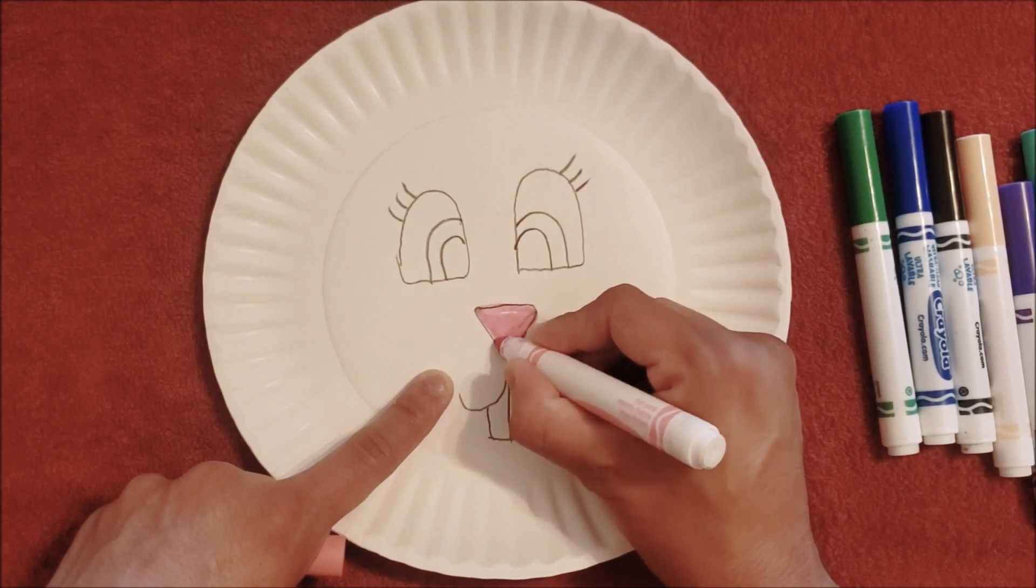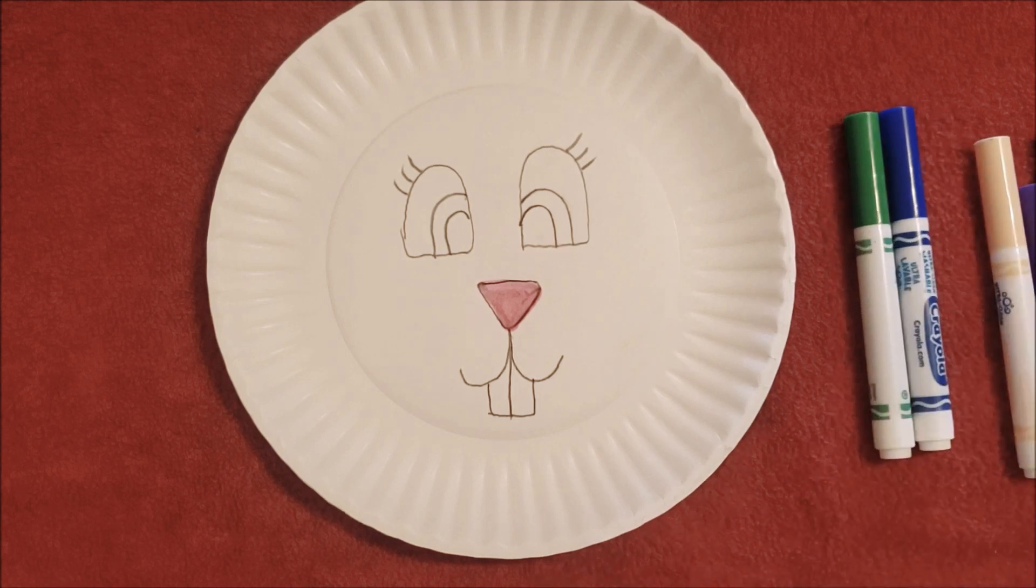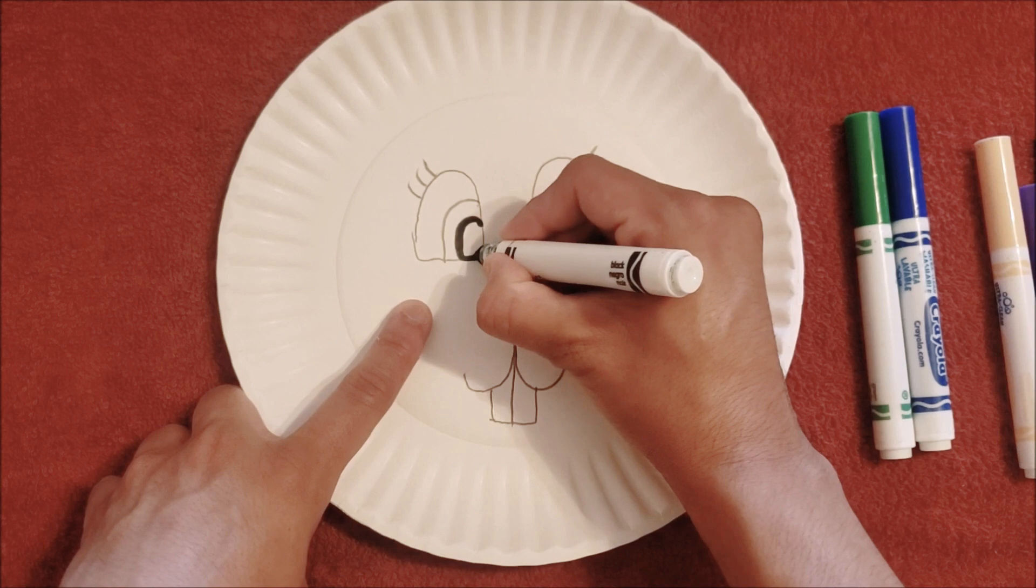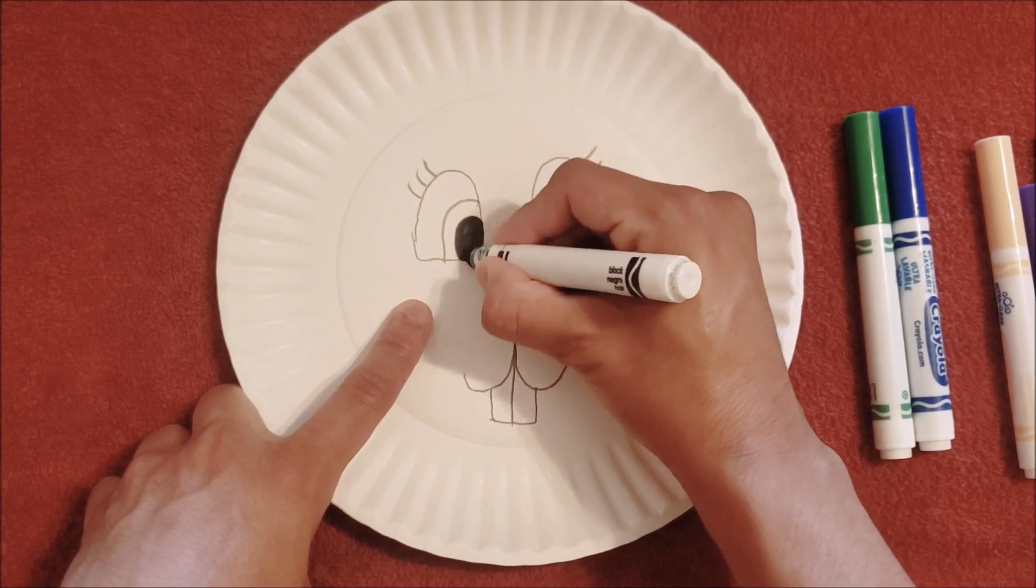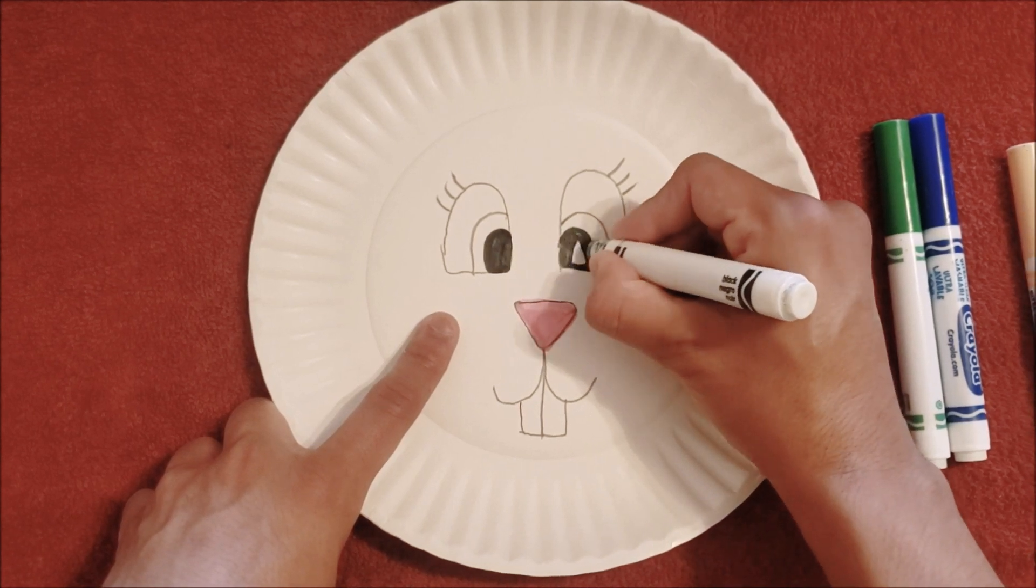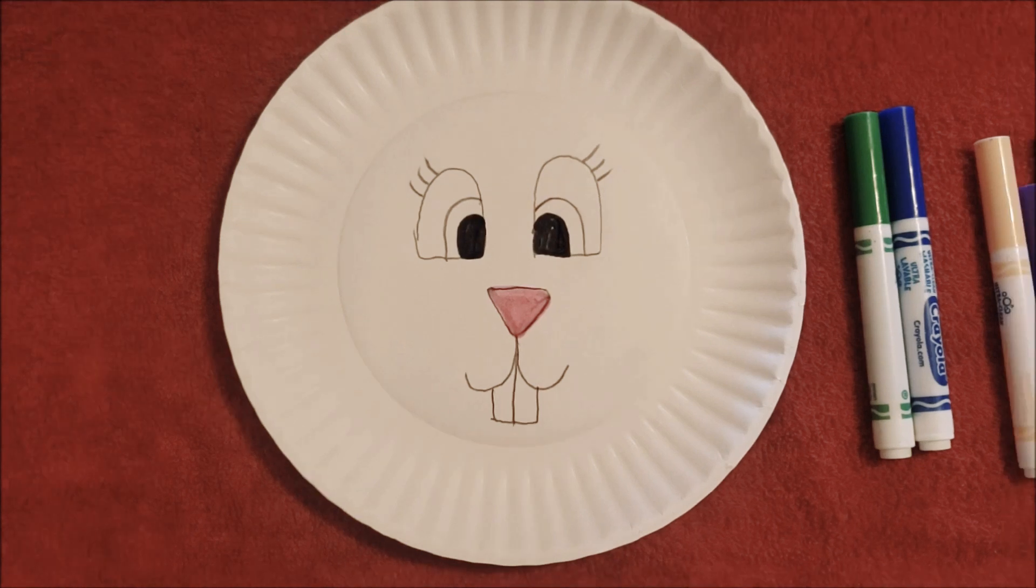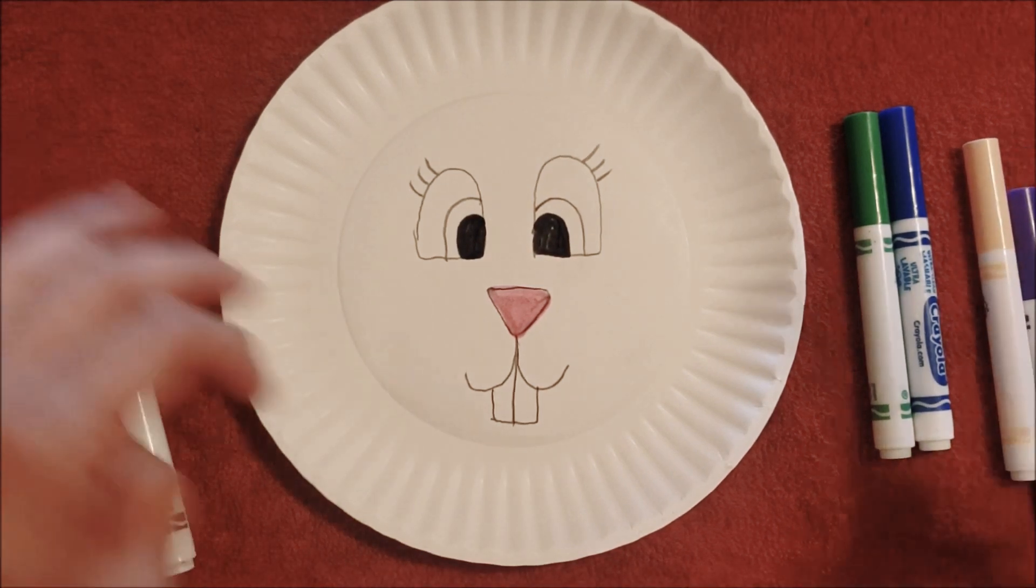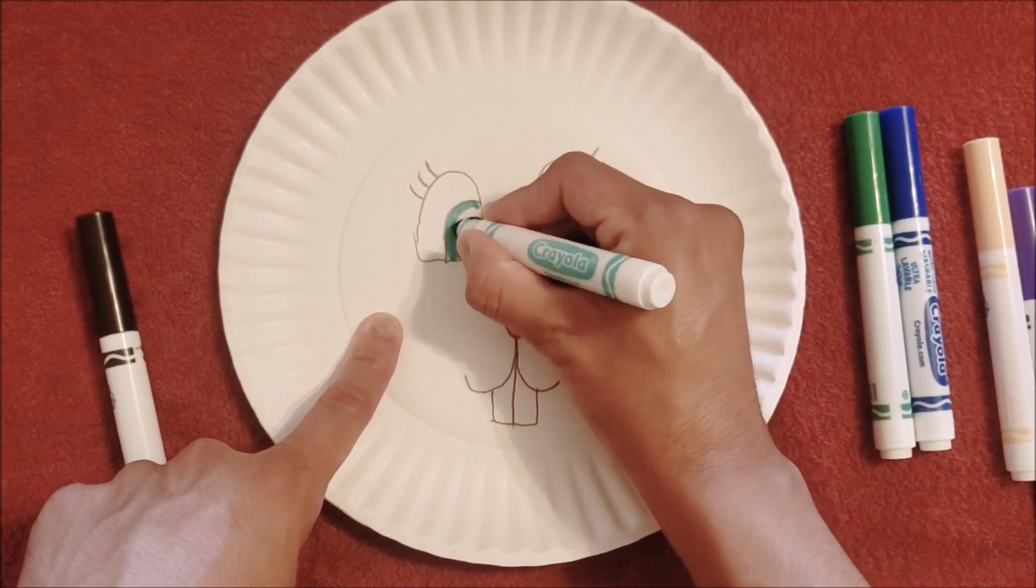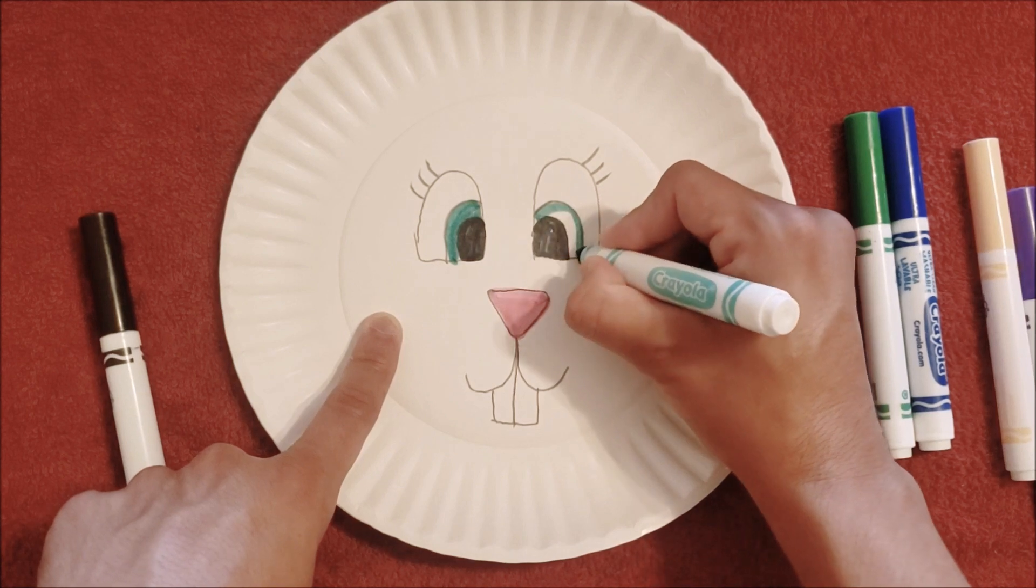Then I'm going to give her eyes. And again, this part is for the child to color in and also have them trace pretty much whatever you drew with a pencil—have them trace it with a marker. That way they can work on their handling skills.